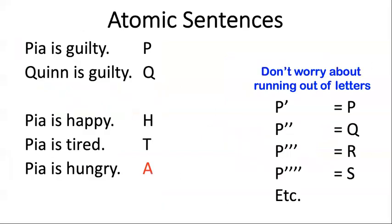For now, let's return to the idea of atomic sentences. Sometimes, I gave you the rule, always pick the atomic sentence that just makes the most sense. Like if you have to translate Pia is guilty and Quinn is guilty, let's just pick P and Q for those. Again, if I need to say Pia is happy and Pia is tired, I can't use P for both, even though they're about Pia. So I'll just use H for happy and T for tired.